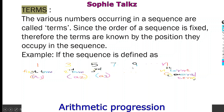In the sequence 1, 3, 5, 7, 9 going to infinity: 1 is the 1st term, 3 is the 2nd term, 5 is the 3rd term, and so on.